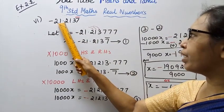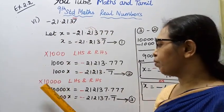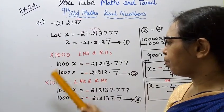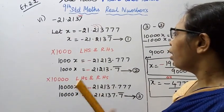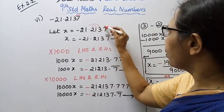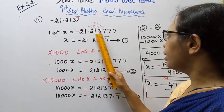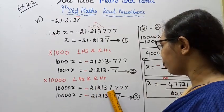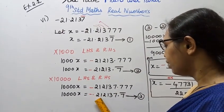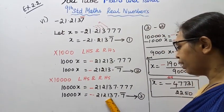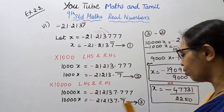How about we calculate. The decimal count is 1, 2, 3, 4 — four decimal places. So multiply by 10,000 on all — left hand side and right hand side. 10,000x. This gives 212137.777... bar. So 10,000x equal to 212137.7 bar.